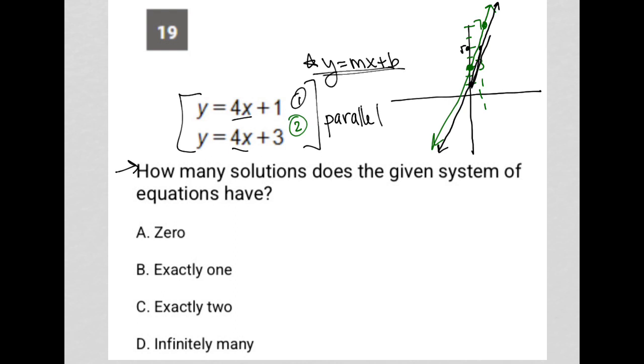So if the two lines will never intersect, that means they will have no solutions. They will never cross each other. There's no solution at all. So how many solutions does the given system of equations have? Zero solutions.